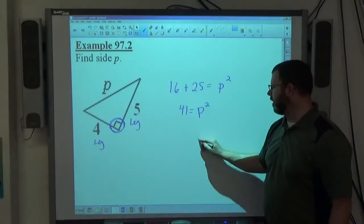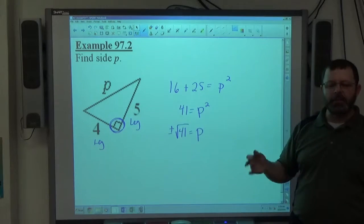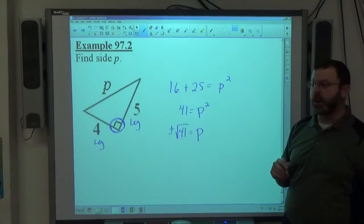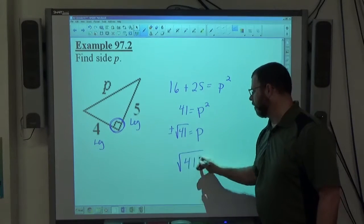So then P is going to equal plus or minus the square root of 41. But again, we're trying to find the missing side of a right triangle, so we're going to take the positive answer. So positive square root of 41 is the correct answer.